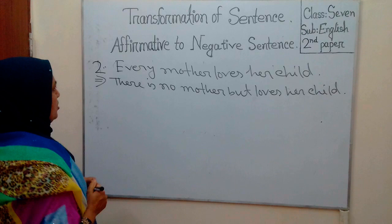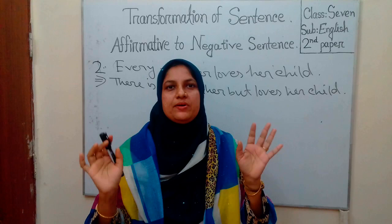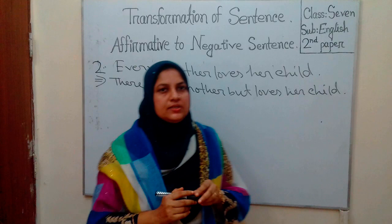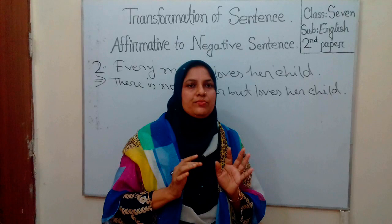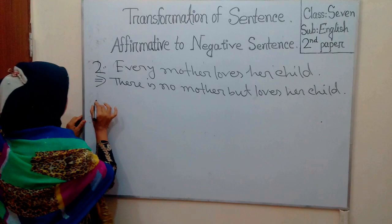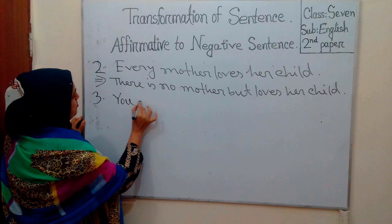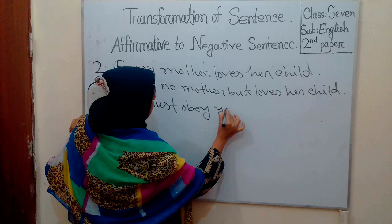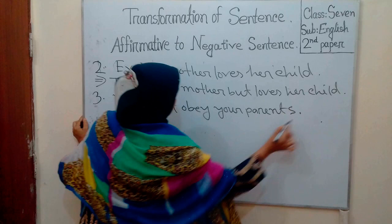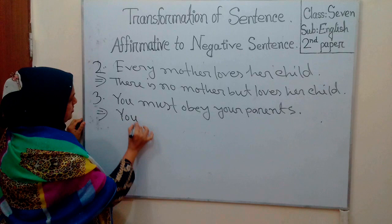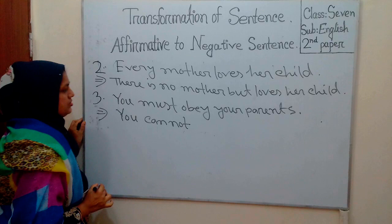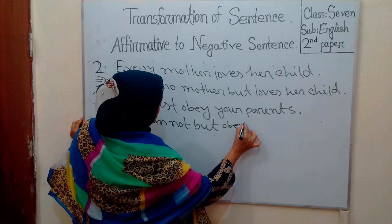Rule 3. If there is 'must' in the affirmative sentence, it should be changed into a negative sentence using 'cannot but' or 'cannot help' with verb-ing. For example: 'You must obey your parents.' Negative sentence: 'You cannot but obey your parents.'